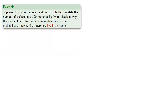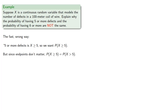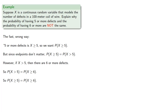You should be careful with this. Suppose x is a continuous random variable that models the number of defects in a 100-meter coil of wire. Explain why the probability of having 5 or more defects and the probability of having 6 or more are not the same. The fast, wrong way: 5 or more defects means x greater than or equal to 5. Since endpoints don't matter, that equals the probability x is strictly greater than 5. But if x is strictly greater than 5, there are 6 or more defects, so we'd wrongly conclude both probabilities are equal.